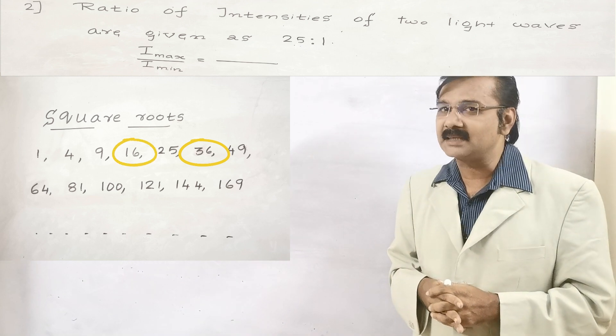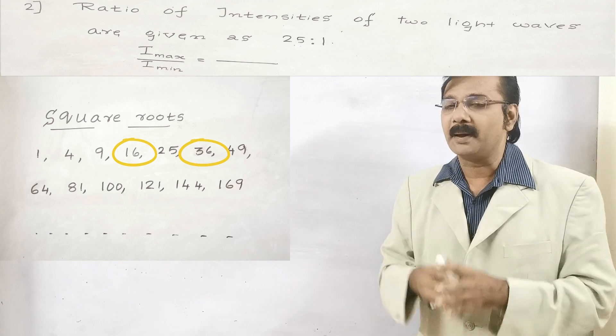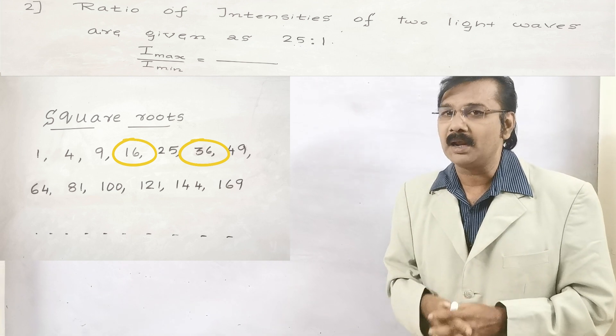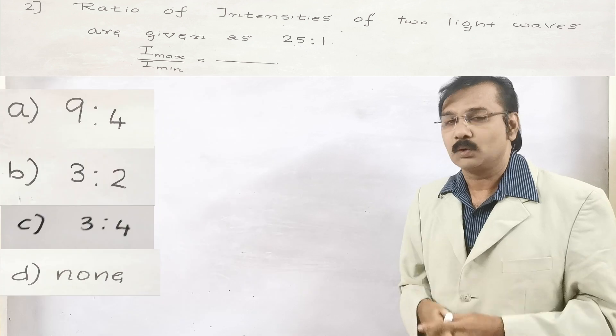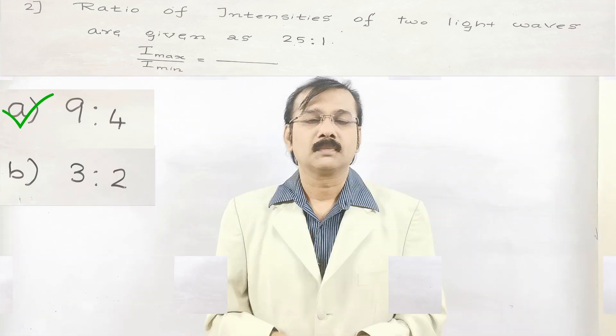Then we get the answer as 36 by 16, which we can divide by a common factor to get 9 and 4, and the answer is 9 is to 4. So what is the option here? It is 9 is to 4. Then your answer is 9 is to 4. I hope you learned the trick now.